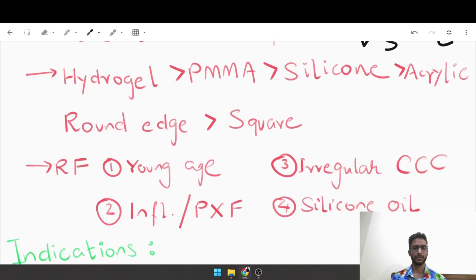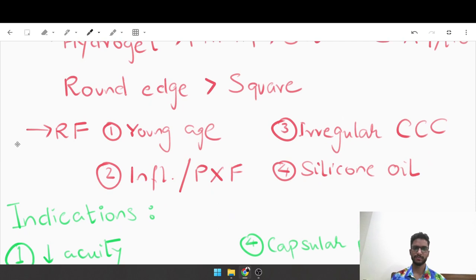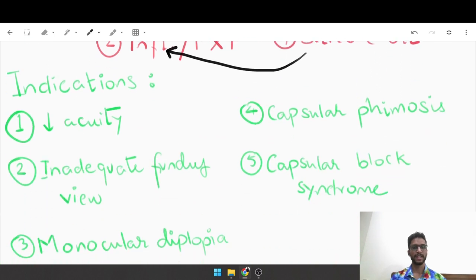What are the risk factors? Young age, because the mitotic activity of the cells is higher in a young individual. If there is inflammation or pseudoexfoliation syndrome, irregular CCC (continuous curvilinear capsulorhexis), because the lens will not fit properly within the capsular bag. And presence of silicone oil, because silicone induces some amount of inflammation.